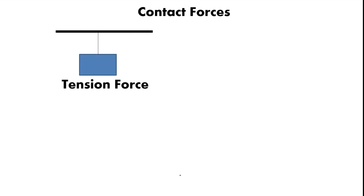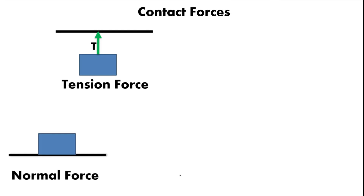For contact forces, there are five kinds we will discuss. The first is tension force, which is always exerted by a string, chain, or rope. Tension always pulls the mass — it acts in the direction of the rope going up or in any direction it's pulled. The second is normal force, which is a force acted by the surface, always perpendicular to the surface. The point of interaction for normal force is from the bottom of the box to the surface, and for tension it is where the rope is tied to the mass.